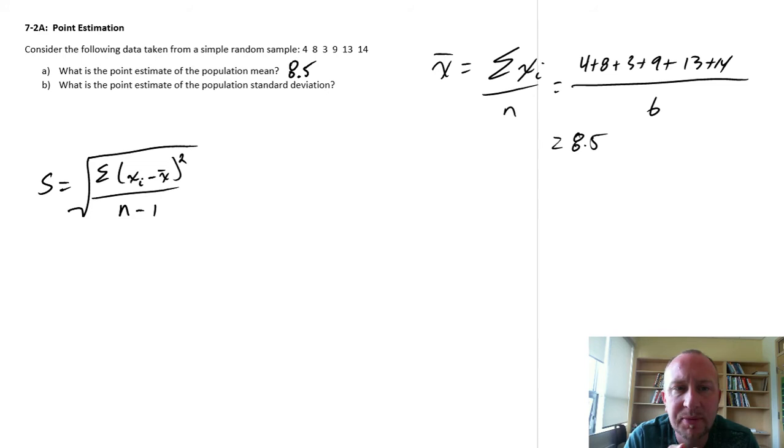So this formula sometimes can look a little bit tedious, and this is i equals 1 through n. But it's really not too bad. It's just a shorthand way of writing something that is otherwise quite lengthy. And the more observations we have, the longer this calculation becomes.